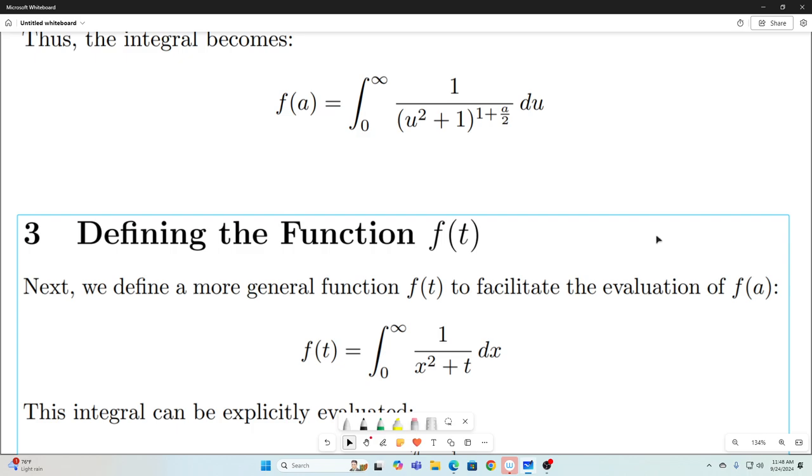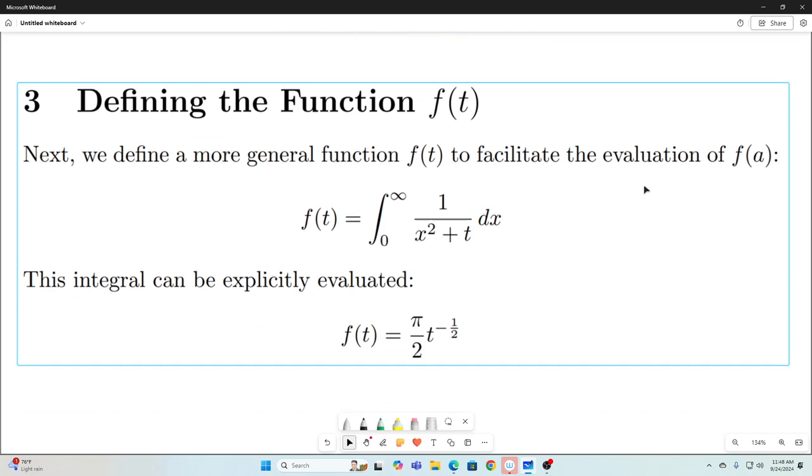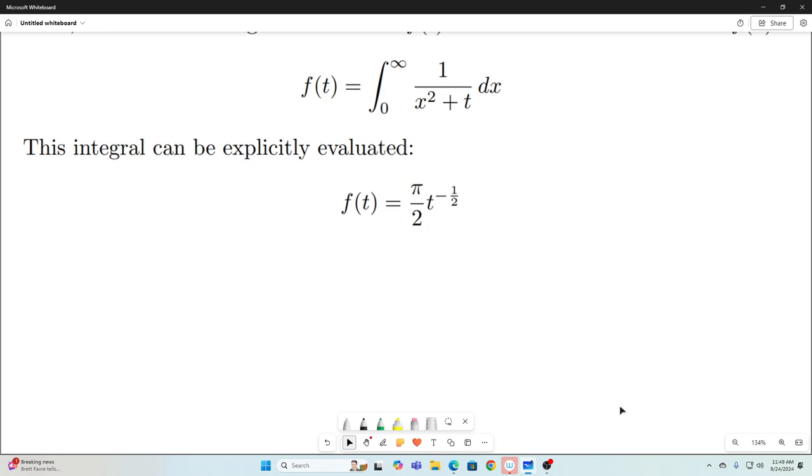So next, let's just define a more general function of t, and this is going to help us evaluate f of a. So our f of t is going to be equal to the integral from 0 to infinity of 1 over x squared plus t integrated with respect to x. And we can just evaluate that integral and find that it evaluates to pi over 2 times t to the negative 1 half. And now what we're going to do is use the Leibniz rule for differentiation under the integral sign on both these expressions for f of t.